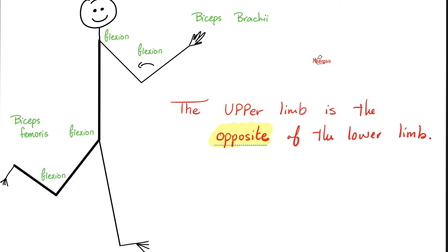Friedrich August von Hayek once said, 'We shall not grow wiser before we learn that much that we have done was very foolish.' Similarly, you shall not grow wiser until you recognize that the lower limb is the exact opposite of the upper limb, because during embryological development, the upper extremity rotated one way and the lower extremity rotated the other way. Imagine that you're standing in the anatomical position. When I ask you to flex your shoulder joint, your upper arm will move more anteriorly. But when I ask you to flex the hip, which is analogous to the shoulder, the thigh is going to move backwards, not forwards, because they are opposites.